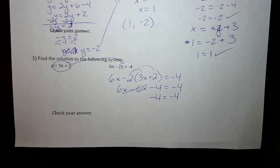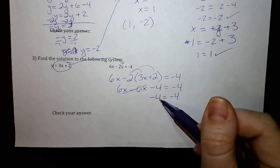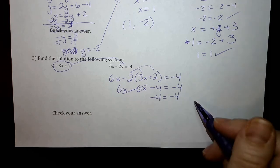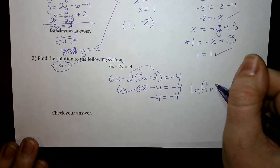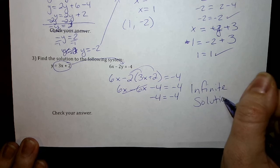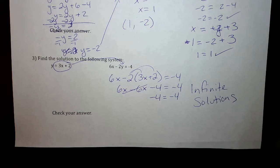So our final step in our work leaves us with negative 4 equals negative 4. This is going to be one of these special cases. When your variables cancel each other out and you're left with a number that does equal the other number on the right hand side, this is going to be infinite solutions. Just like when you were graphing and you ended up with two lines on top of each other, it was infinite solutions because they meet everywhere along the line. When your variables cancel out and you end up with a number equals the same number, it's infinite.